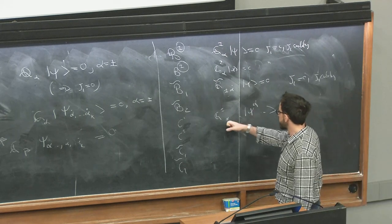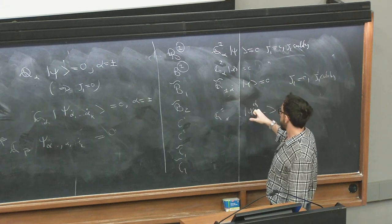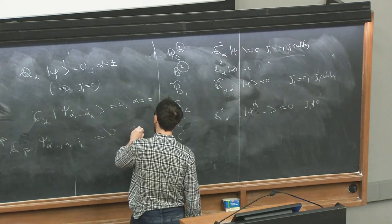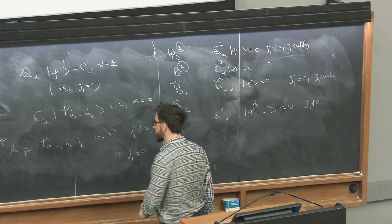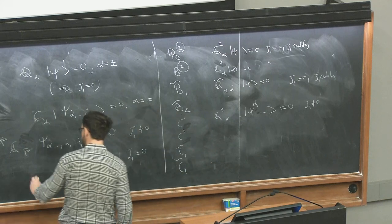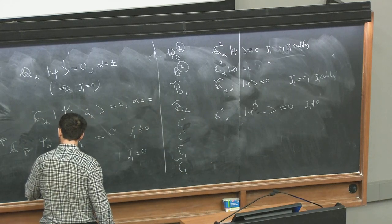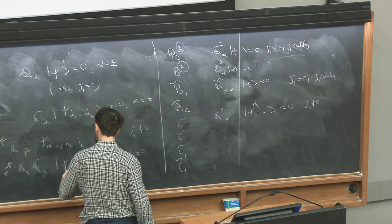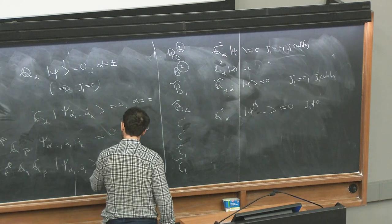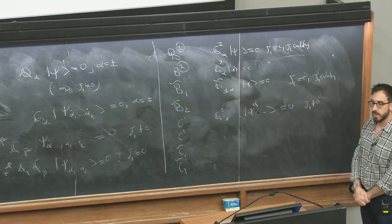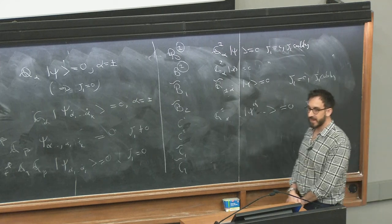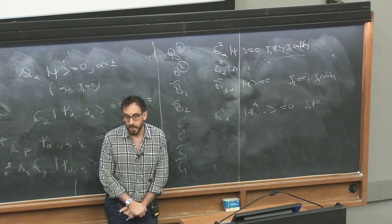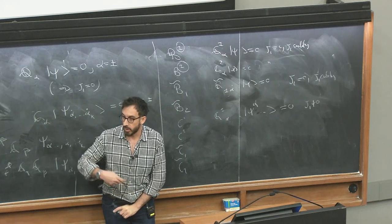There is a small subtlety: this is the version of the C condition if J_1 is different from zero. The correct version of the C condition if J_1 equals zero is that the square of Q annihilates the state — it's a level-two condition, and this object has no alpha indices. I'm not deriving any of this — I'm simply stating that these are the only possible null states that can appear when you start computing norms of descendant states.